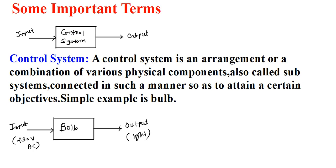For example, if we are talking about a fan, it contains coils, capacitors, and other components. That is the arrangement or combination of various physical components — also called subsystems — connected in such a manner so as to attain a certain objective.